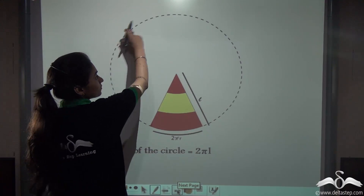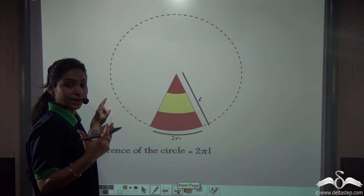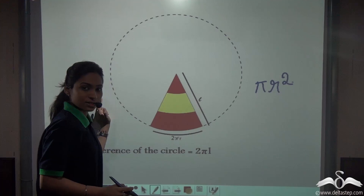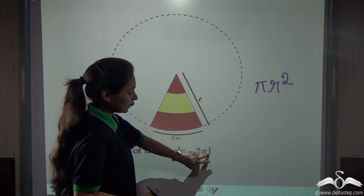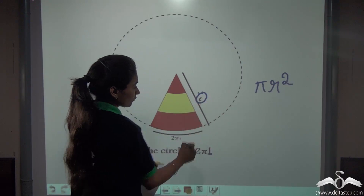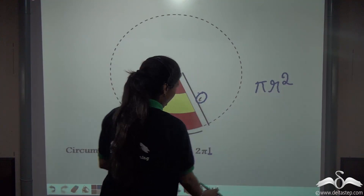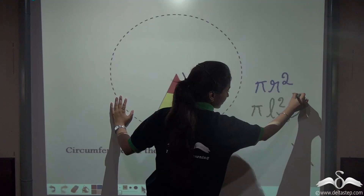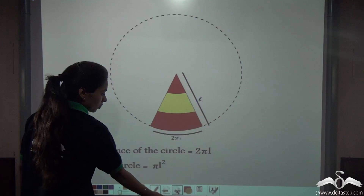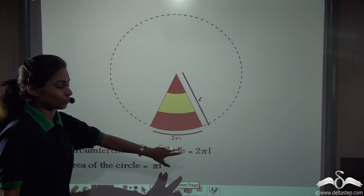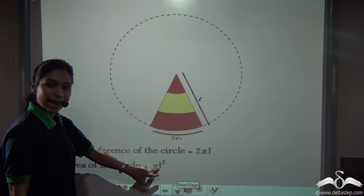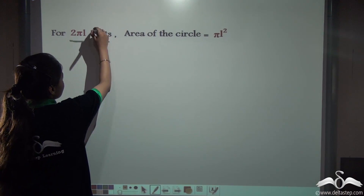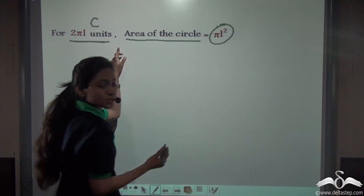Now can you tell me what will be the area of this big circle? The area of any circle is πr² where r is the radius. So again, we take L as the radius of this circle and substitute L in place of r. So the area of this circle is πL², where L is acting as the radius. We found that the circumference of this big circle is 2πL and the area of this circle is πL².